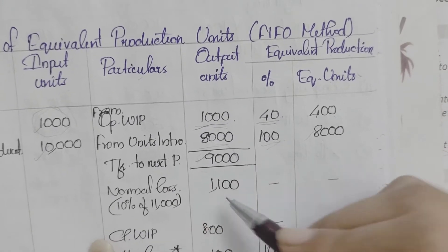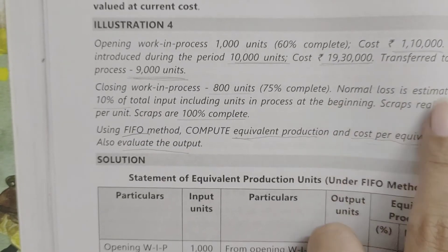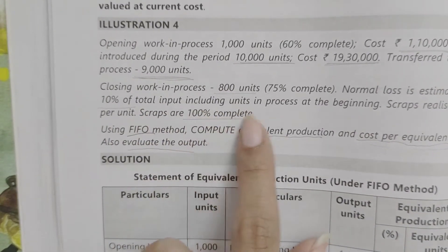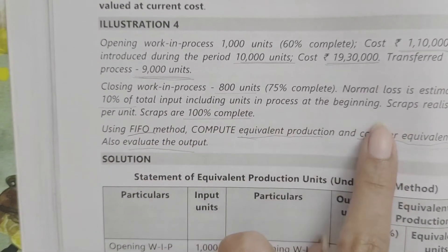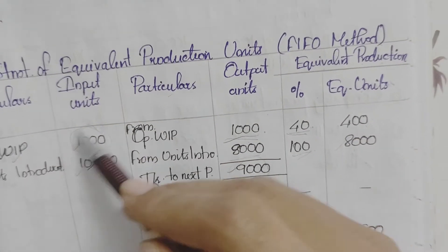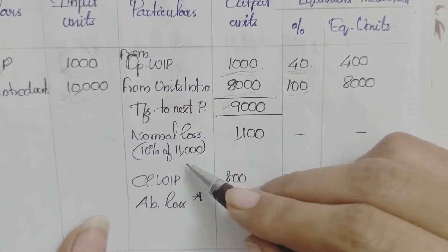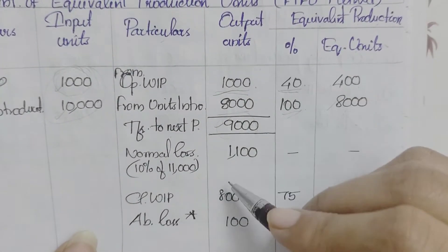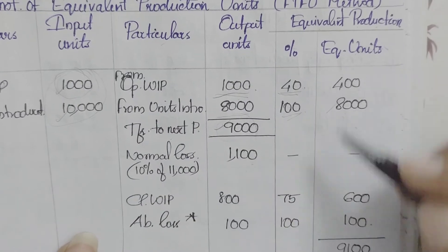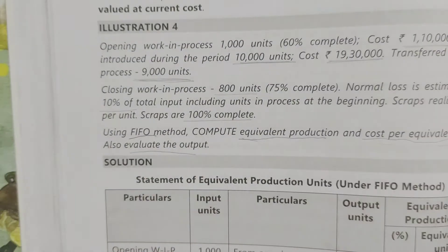Transfer to next process is 9,000 units. Normal loss is estimated at 10% of total input including units in process at the beginning. Total input is 11,000, so 10% normal loss = 1,100 units. Equivalent production for normal loss — since scrap realizes value — we note this separately.